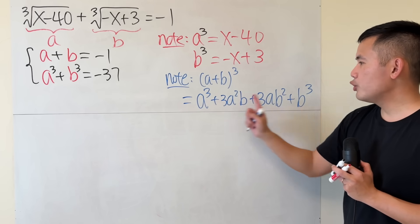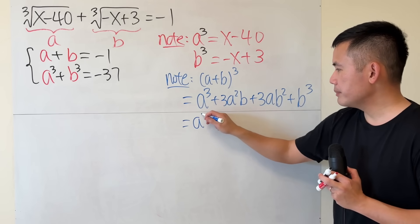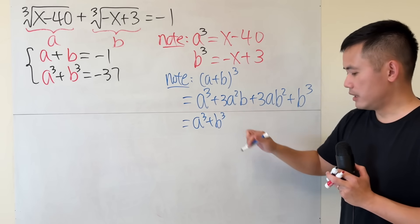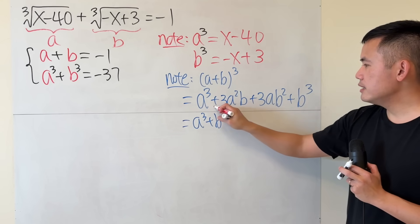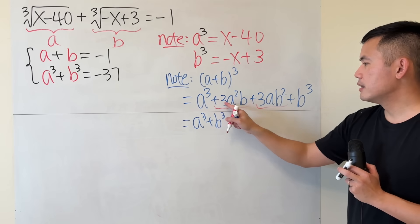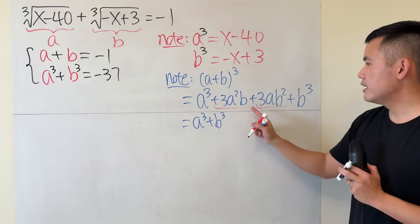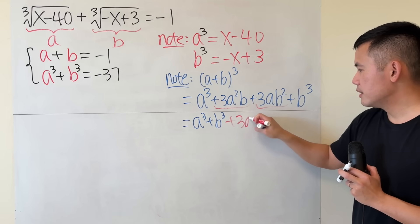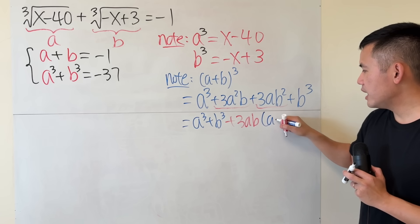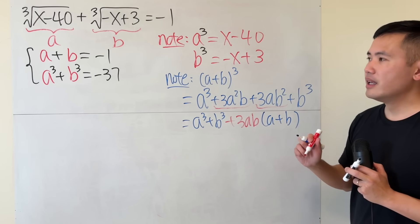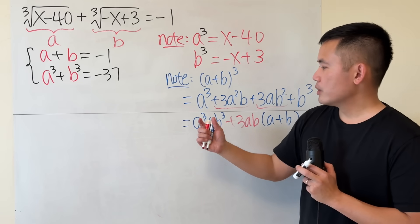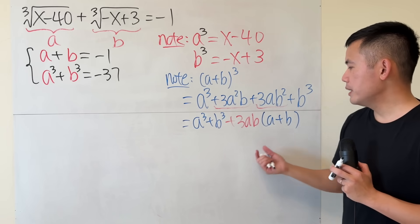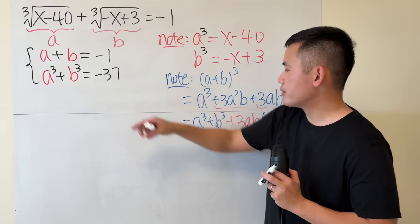So we see we do have the a cube and b cube. Let's put them together. Next, though, I would like to look at these two terms, and then factor out the common factor, 3, one of the a's, and one of the b's. And then we will get a plus b here. So now, as you can see, we have a cube plus b cube, and then a plus b. With these numbers, we can get to ab.